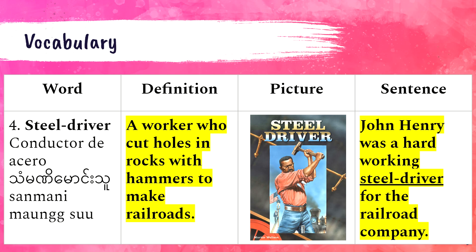Number four is actually two words: 'steel driver.' A steel driver is a worker who cut holes in rocks with hammers to make railroads. Back a long time ago, when railroads were first invented in the late 1800s and early 1900s, people who were steel drivers had to cut holes in the rocks and put metal spikes in there so they could lay down the railroad tracks.